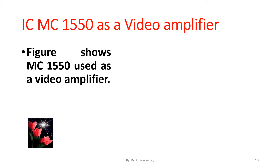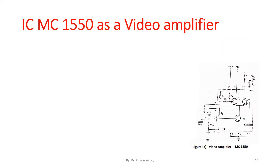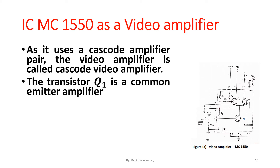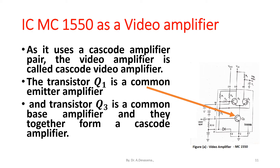The figure shows MC-1550 as a video amplifier. As it uses a cascode amplifier path, the video amplifier is called a cascode video amplifier. Transistor Q1 is a common emitter amplifier, and transistor Q3 is a common base amplifier, and together they form a cascode amplifier.